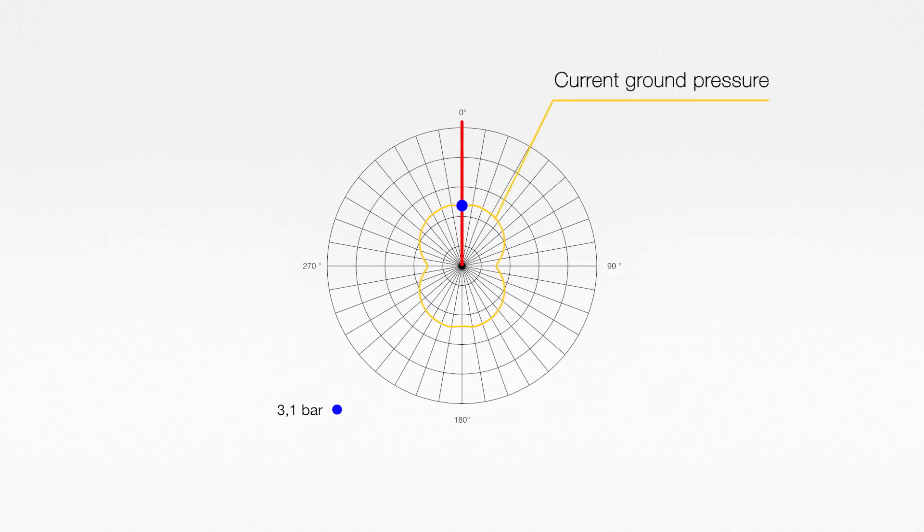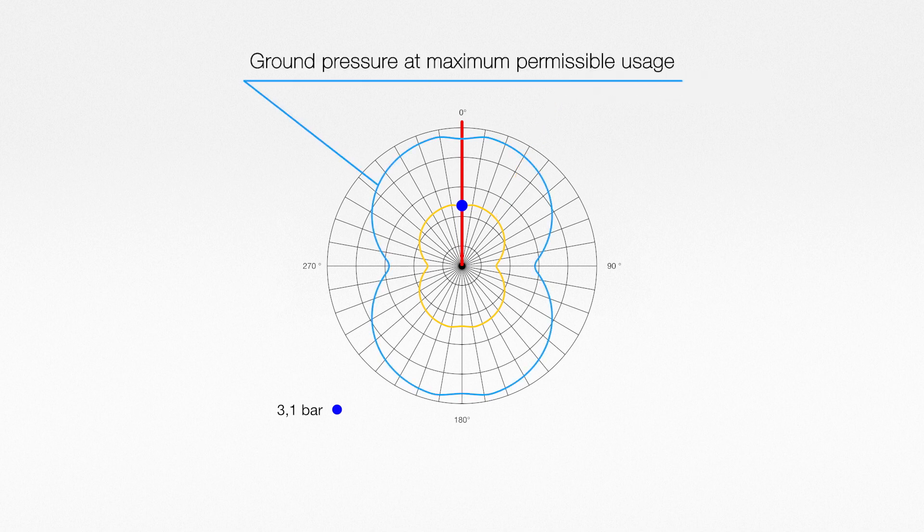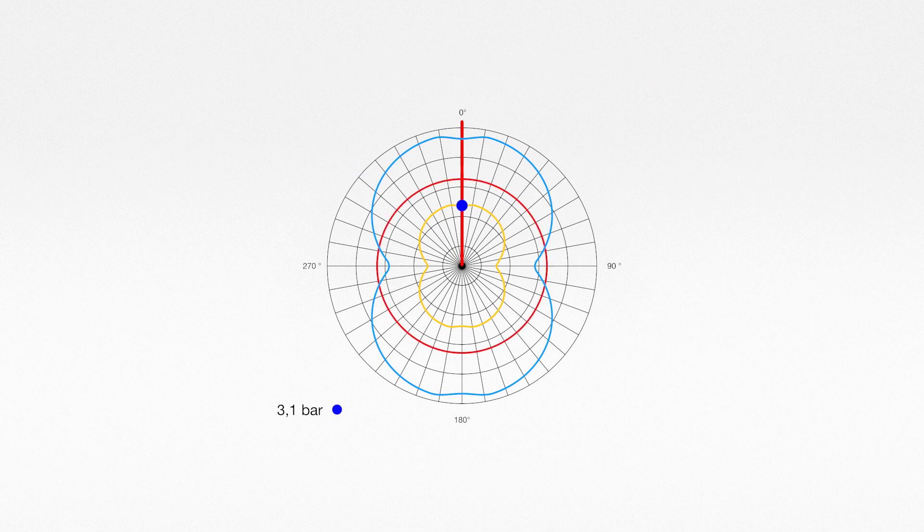As a result, the distribution of the ground pressure is displayed on your monitor in real time. Also the ground pressure at maximum permissible usage in blue, and the maximum permissible ground pressure in red.